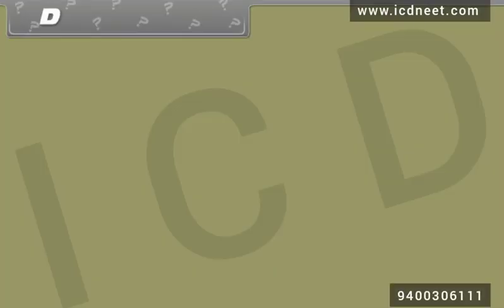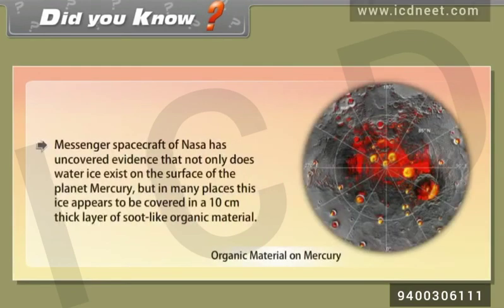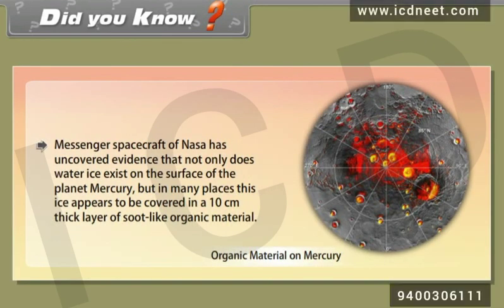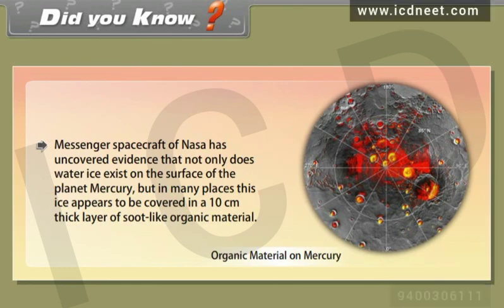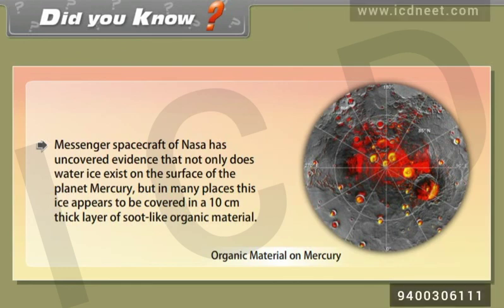Did you know? NASA's Messenger spacecraft has uncovered evidence that not only does water ice exist on the surface of planet Mercury, but in many places this ice appears to be covered in a 10 cm thick layer of soot-like organic material.